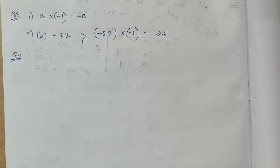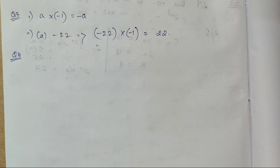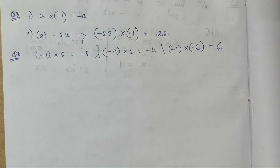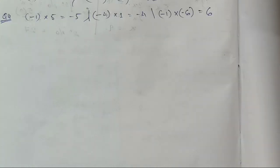Question 4 requires us to show a pattern starting with -1 × 5 to demonstrate that -1 × -1 = 1, that is, minus times minus is positive. We just need to show some examples — there are infinite examples to illustrate this property. You can find many examples on your own.